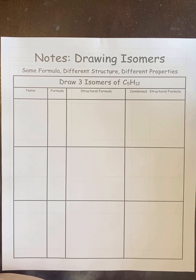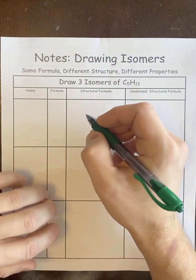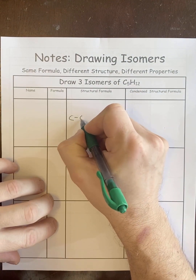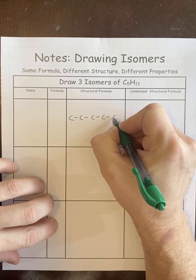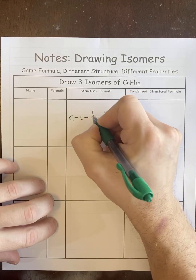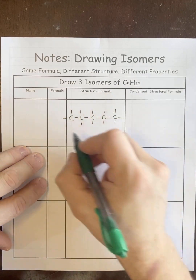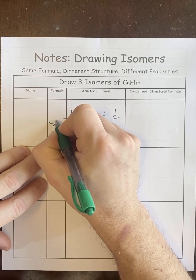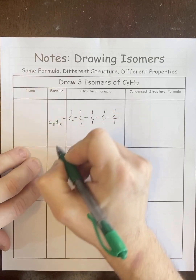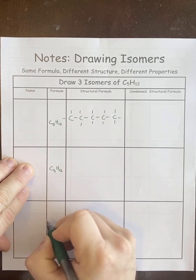Students notoriously have trouble drawing isomers, so I'm going to take you through step by step. The first isomer is always a freebie. So if you wanted to draw the three isomers of C5H12, the first one is always the straight chain alkane — C5H12. These are all going to be C5H12 when we're done.